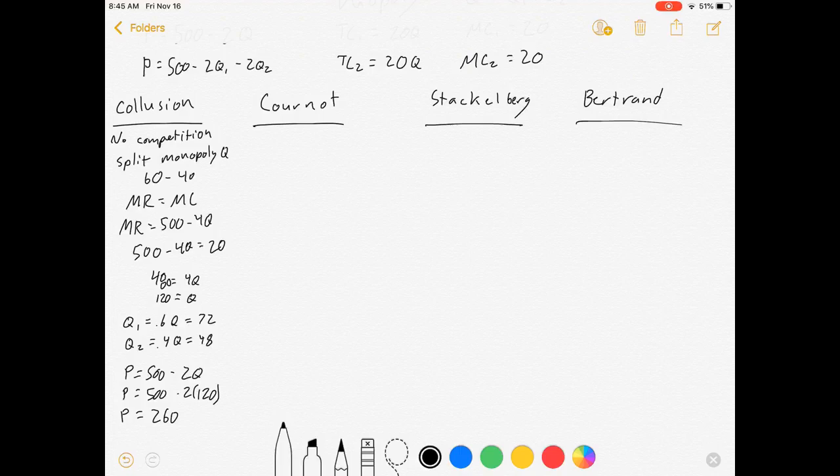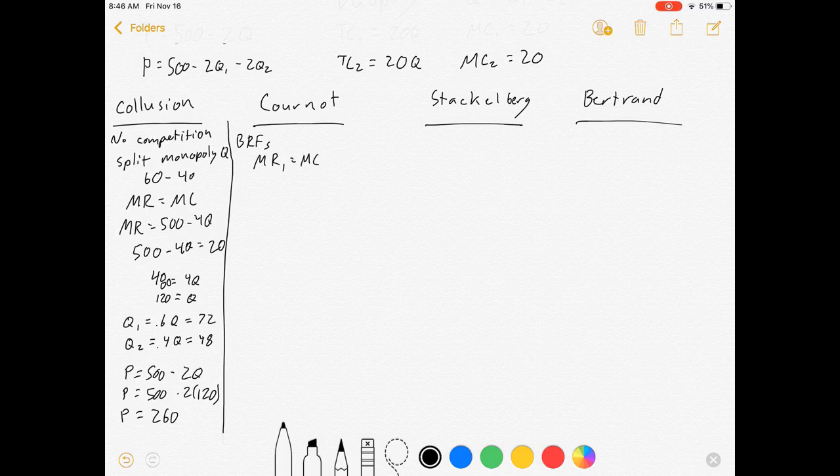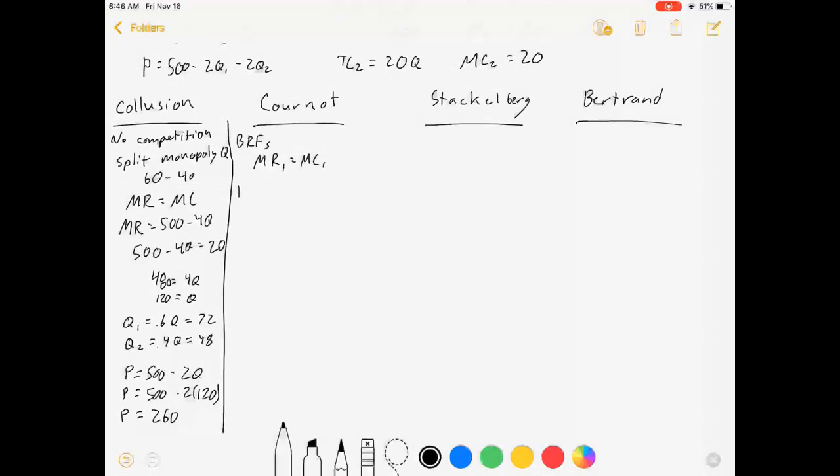Now Cournot gets a little trickier. In Cournot we need our best response functions and we need to see where they intersect each other. A best response function for firm one means whatever Q2 does, the best response function tells me what will give me the highest profit.